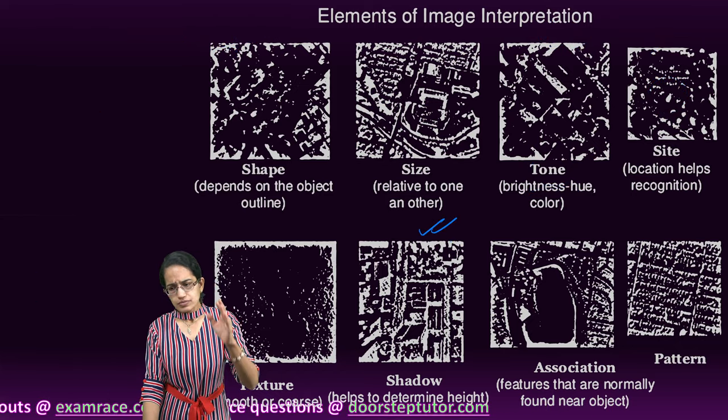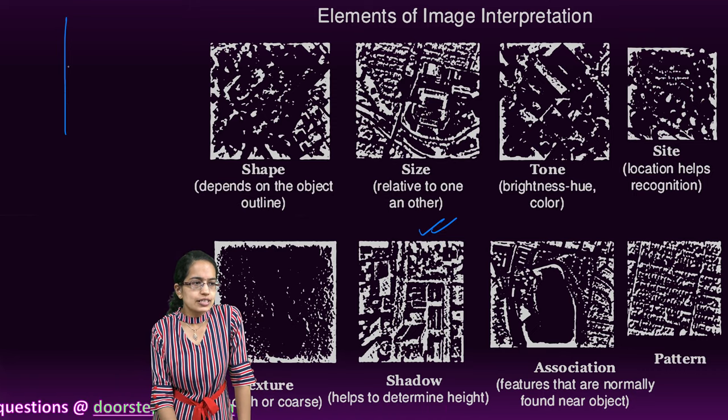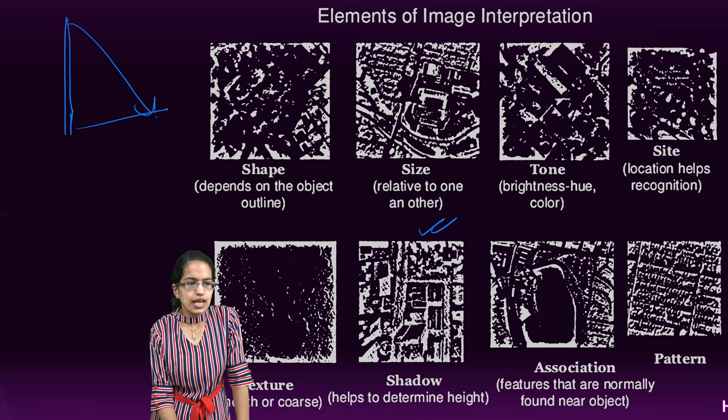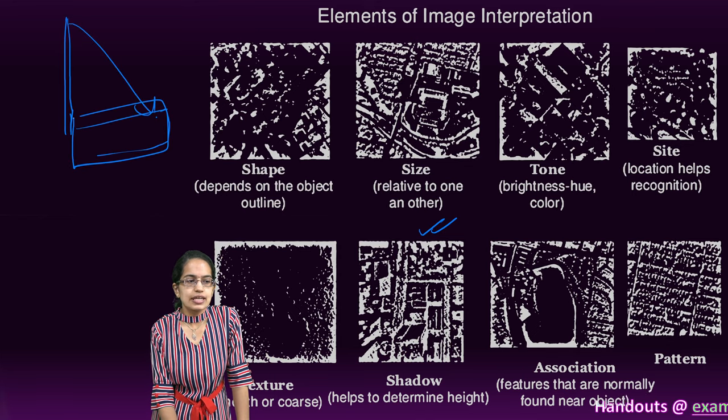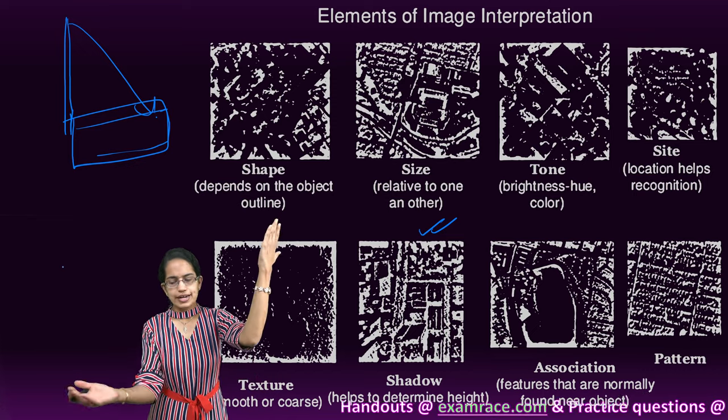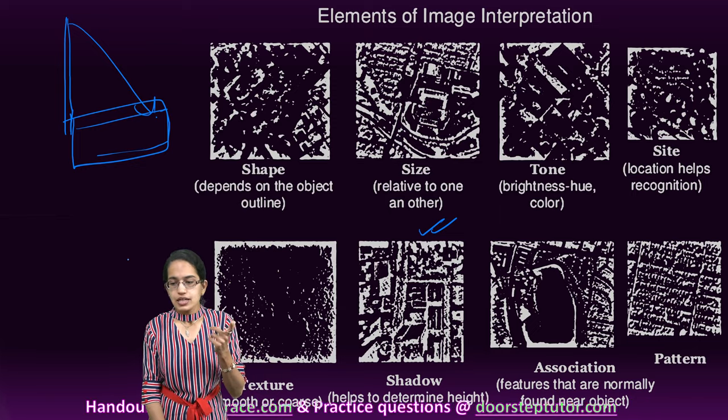The next is shadow. Shadow helps us to determine the height. Let's say there is a big minaret and then there would be the shadow of this minaret that would be seen and the resulting area would be based on that. If you are sighting an area just besides Kutub Minar, that would be the case in the shadow.